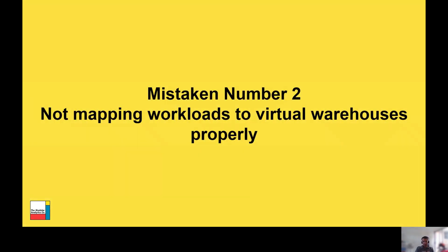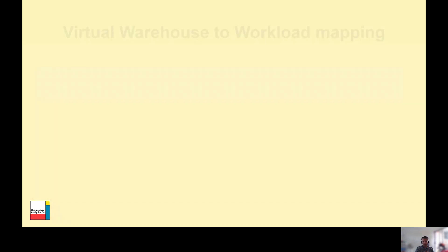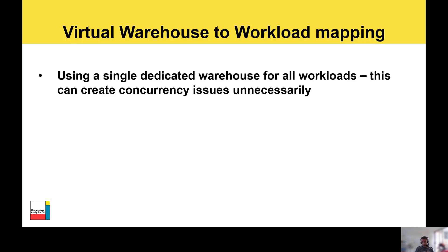Mistake number two: not mapping workloads to virtual warehouses correctly. I've seen instances where companies are using a single dedicated warehouse for every single workload, whether that's a large workload or quite a small, quick query. Every query from consumers and data visualization tools is hitting that same warehouse, which can create contention issues and queuing queries. There's no real need for that — Snowflake provides flexibility and T-shirt sizing around warehouses so you can segregate workloads and size your virtual warehouse appropriately.